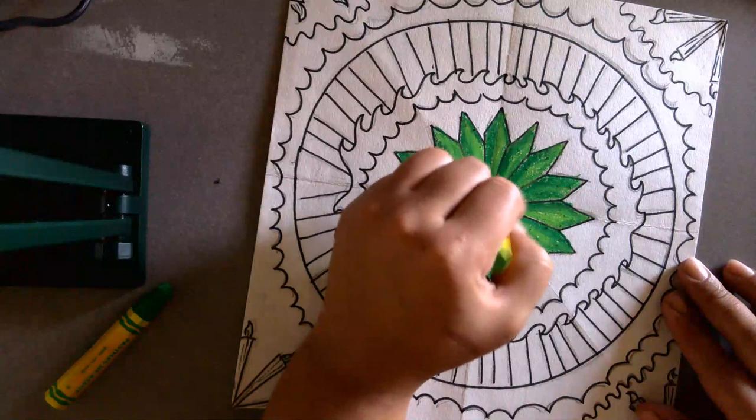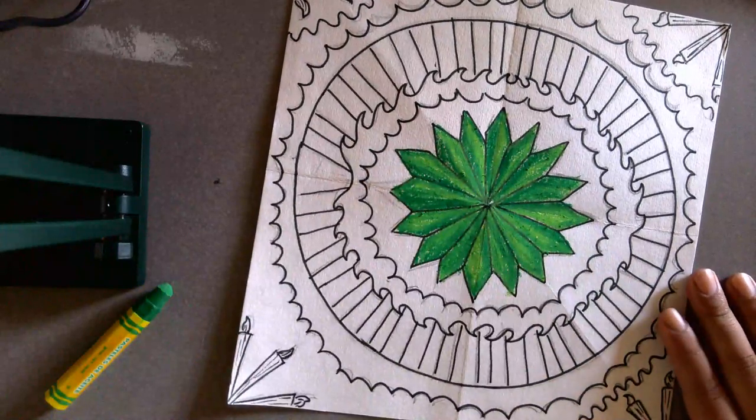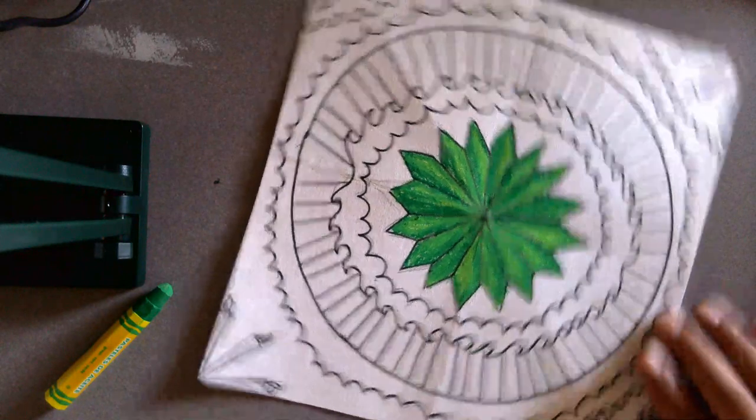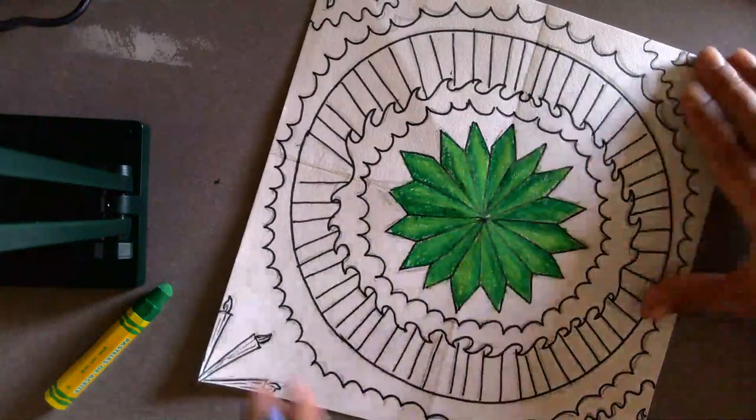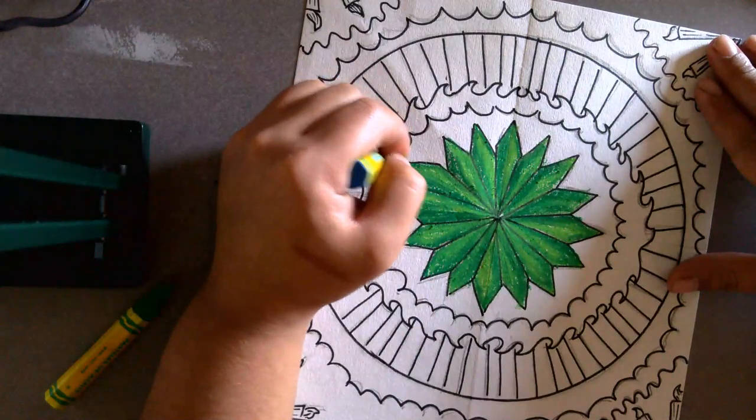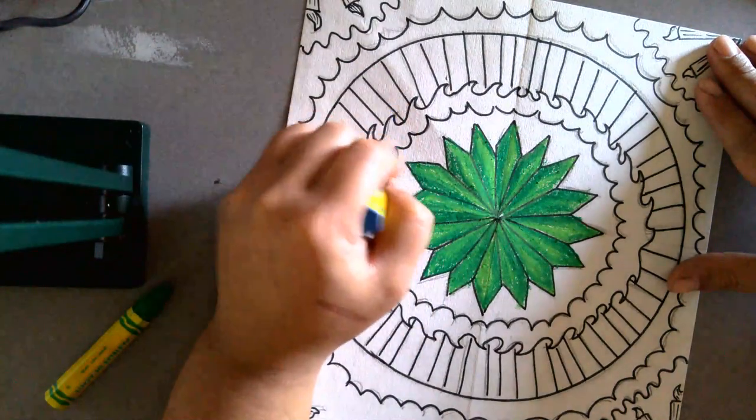Alright, and that is my first symbol all done. I also have some waves in here that I can do real quick and then I'll let you guys go. You can go and get working on yours, I'm just going to keep coloring for a bit so that you can see the finish.